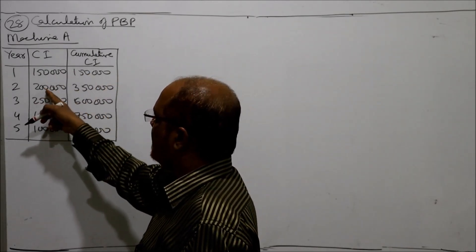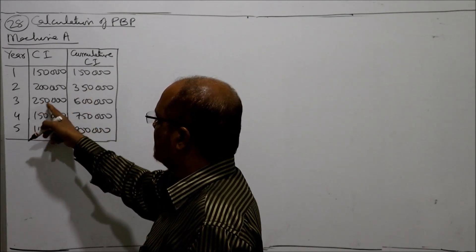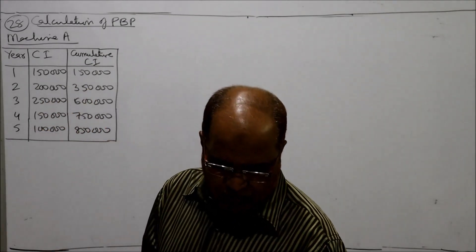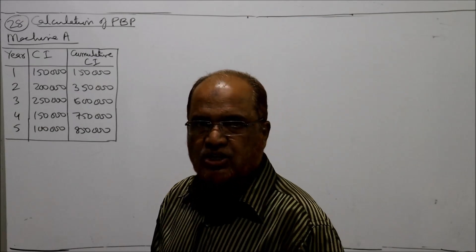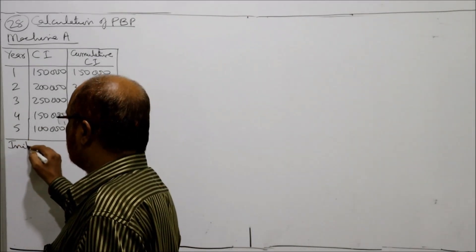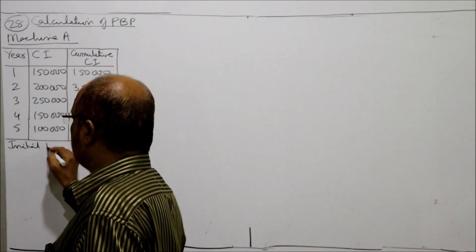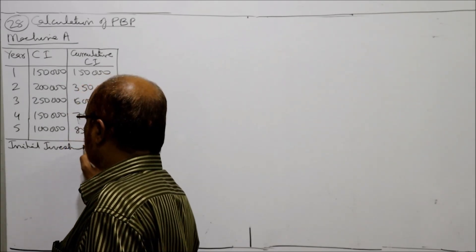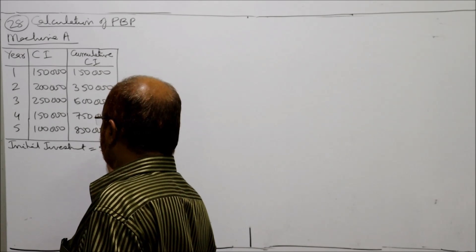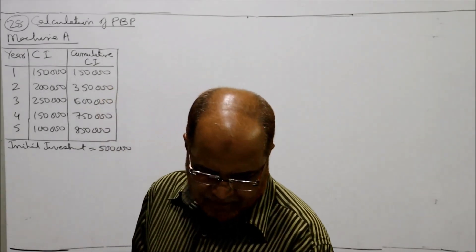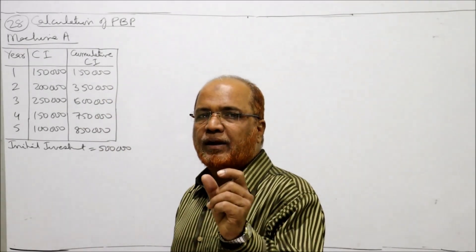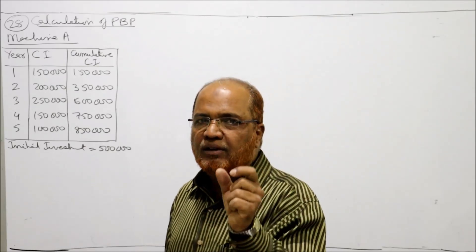Five lakh lies between the cumulative values at year 2 (three lakh fifty thousand) and year 3 (six lakh). Amount recovered up to end of year 2 is three lakh fifty thousand. Amount still to be recovered in year 3 is five lakh minus three lakh fifty thousand, which equals one lakh fifty thousand. Cash inflow of year 3 is two lakh fifty thousand.